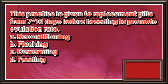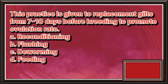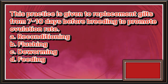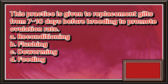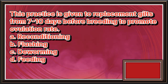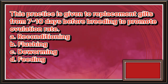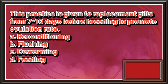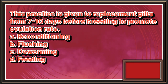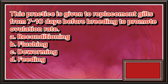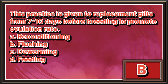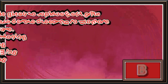This practice is given to replacement gilts from 7 to 10 days before breeding to promote ovulation rate. A. Reconditioning. B. Flushing. C. Deworming. D. Feeding. The answer is letter B.